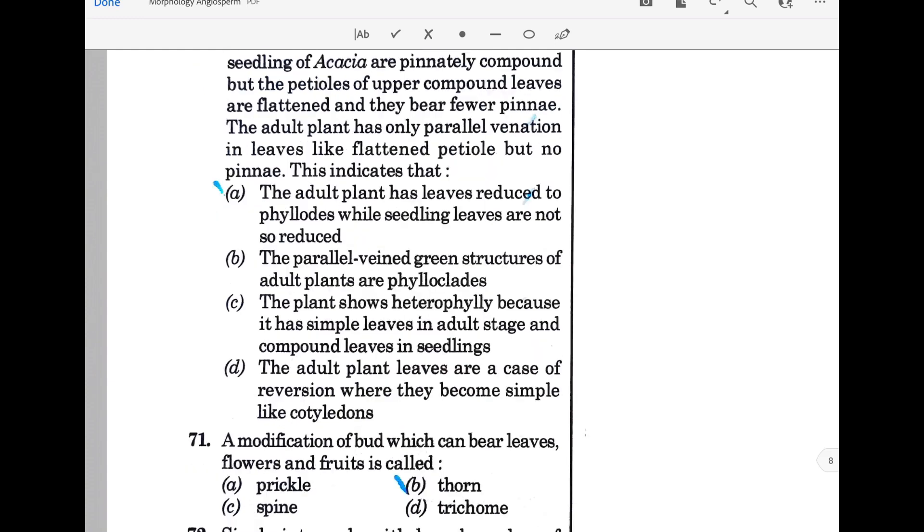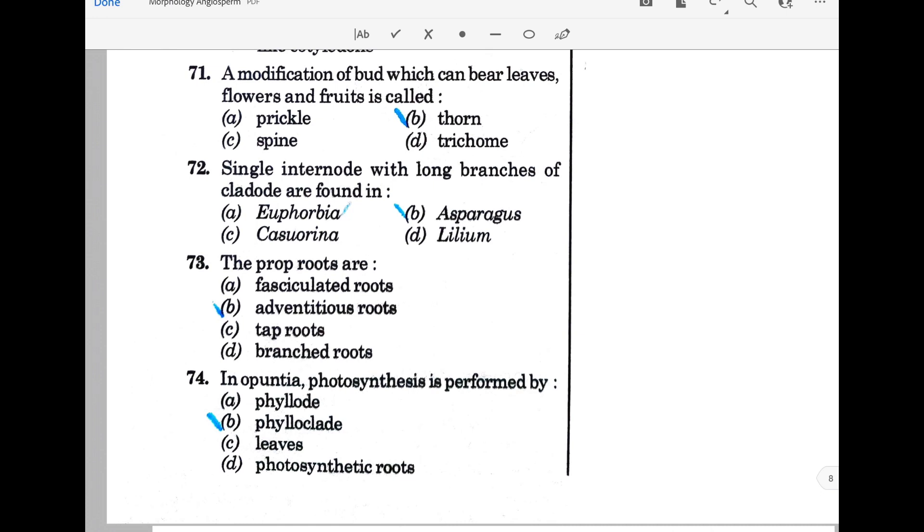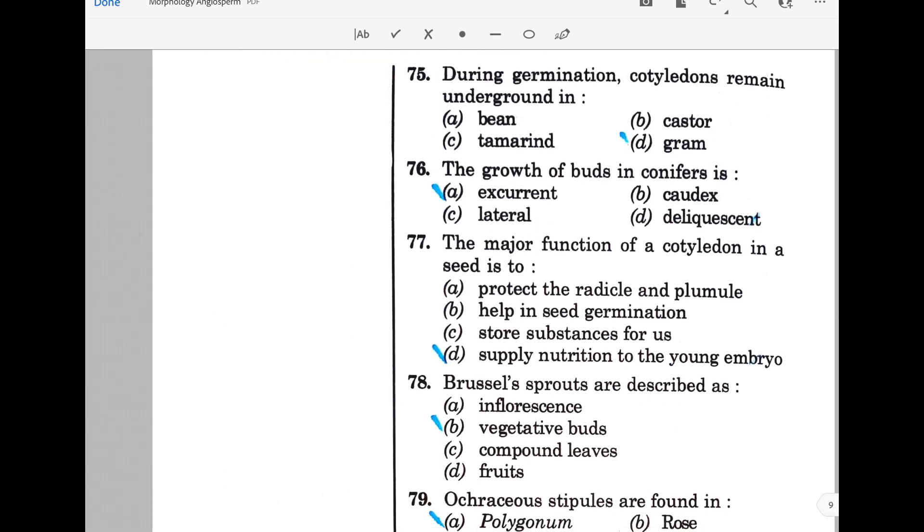A modification of bud which can bear leaves, flowers, and fruit is called a thorn. Single internode with long branches of cladodes are found in Asparagus. The prop roots are adventitious in Pandanus. Photosynthesis is performed by phylloclades. During germination, cotyledons remain underground in gram. The growth of buds in conifers is excurrent. The major function of cotyledon in a seed is to supply nutrition to the young embryo. Brussels sprouts are described as vegetative buds.